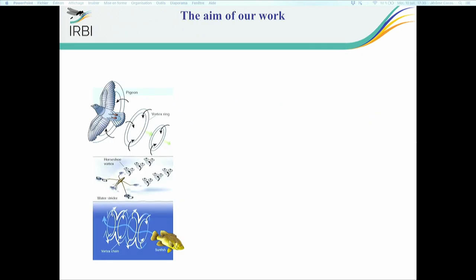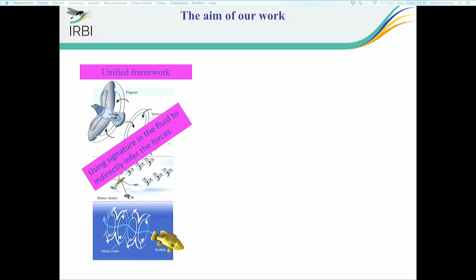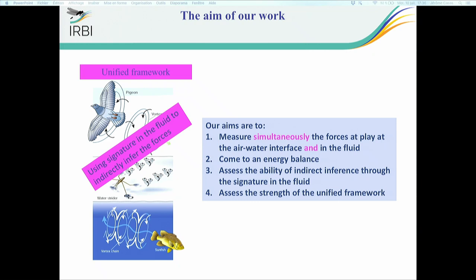Part of the work we have done is to solve that conflict. David's and John Bush's study was also key because it meant that animals walking on the water surface were not so different from the others. Using vortices, due to the complexity of finding the forces and pressure just around the body, which is very difficult to do, using the signature in the fluid you could go back to the forces. So there was some kind of unified framework. The aim of our work was to measure both the surface of the fluid and the within fluid movements with the hope to come to an energy balance.